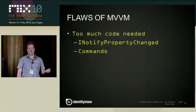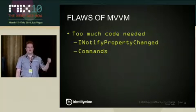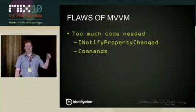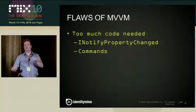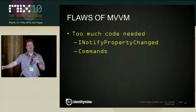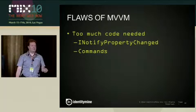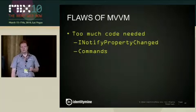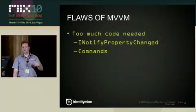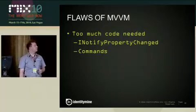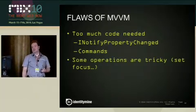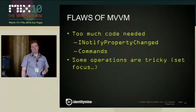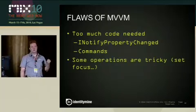I just don't understand why I cannot say something like 'mouse left button down event equals binding my method.' Honestly, I think that's something which is going to come in the framework, but right now you have to go through commands. Also, some operations are tricky, like setting the focus on a UI element from the view model.